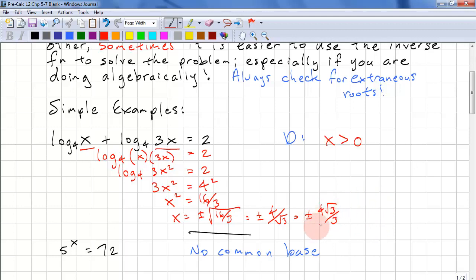Because -4√3/3 is not in the domain, it's extraneous, 4√3/3 is our solution.